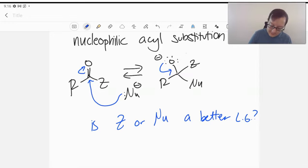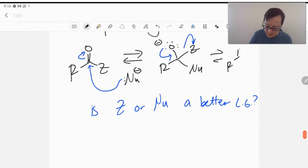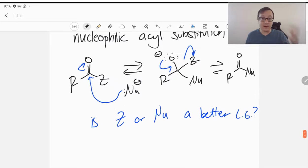Assuming that Z is the better leaving group, it gets kicked out. And we will end up now reforming our carbonyl with our new nucleophile attached. So it's a very simple mechanism. Nucleophilic attack, loss of a leaving group, reform the carbonyl. Done.